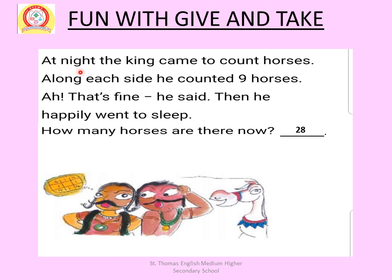At night the king came to count horses. Along each side he counted 9 horses and said, 'Ah, that's fine,' then happily went to sleep. But how many horses were there now? In total there were 28 horses.